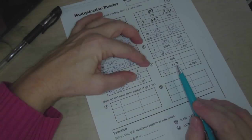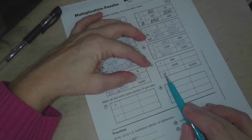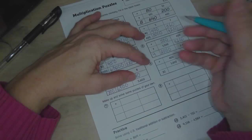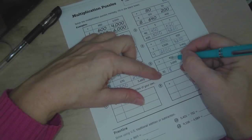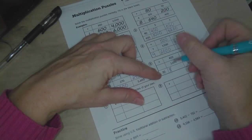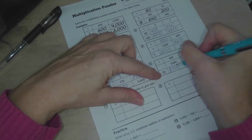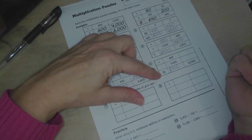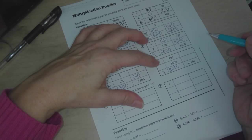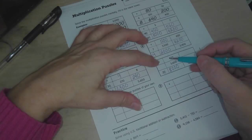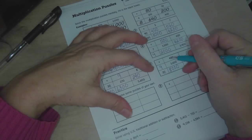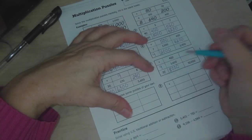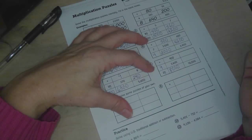And number 6, 20 times 400. Well, 2 times 4 is 8. So now we have one zero here and two zeros here, so that's three zeros altogether. So we have to put those three zeros there. And 400 times what equals 3,600? Well, we know that 4 times 9 equals 36. And there's two zeros here and two zeros here, so we don't need to put any zeros there.